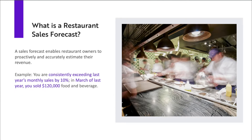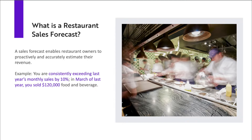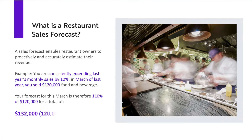As an example of forecasting for your restaurant, you might know that you are consistently exceeding last year's monthly sales by 10%, and that last year, in the month of March, you sold $120,000 in food and beverage. Your forecast for this March is therefore 110% of that $120,000, for a total of $132,000. The formula is: $120,000 multiplied by 1.1, equaling $132,000.